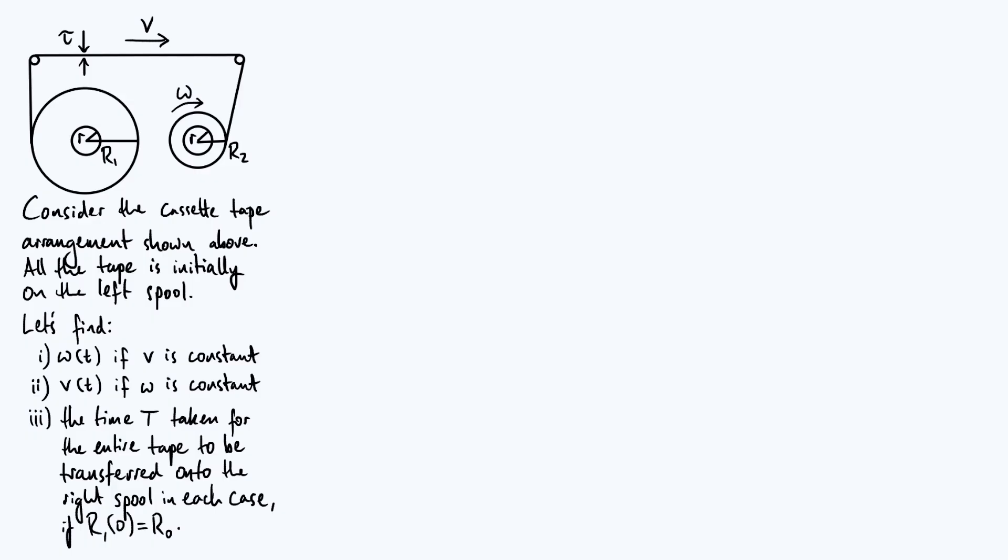The spool on the right is rotating and pulling tape from the left spool onto itself. There are a lot of parameters needed to fully describe this system. The tape has thickness tau, moving at the top with velocity v. The driver spool on the right is rotating with angular velocity omega. The inner radius of each spool is lowercase r, and the total instantaneous radius of the individual spools are R1 and R2 respectively.